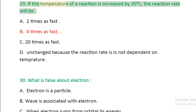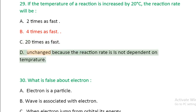Question 29: If the temperature of the reaction is increased by 20 degrees Celsius, the reaction rate will be: A. 2 times as fast, B. 4 times as fast, C. 20 times as fast, D. Unchanged because the reaction rate is not dependent on temperature.